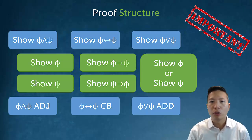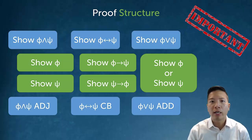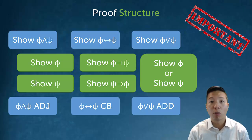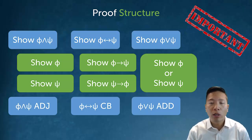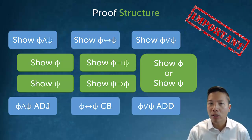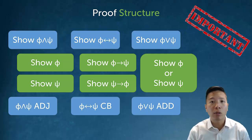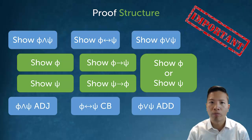The introduction rule for or is also quite revealing in terms of proof structure. If I want to show phi or psi, I know that all I really need is one side, because if I have one side I can just add to it using the addition rule to get the disjunction I want. So I don't need to show both sides of the disjunct — I only need to show one and then use the proper introduction rule.